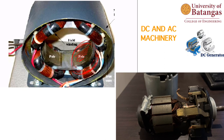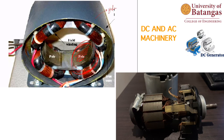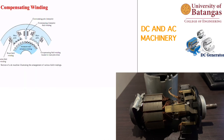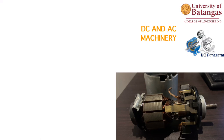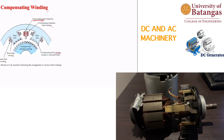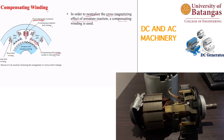This design reduces reluctance, allowing fluxes to be linked freely. Next is the compensating winding. To neutralize the cross-magnetizing effect of armature reaction, a compensating winding is used. Because the field poles create a magnetic field in the air gap, when the armature rotates and voltage is induced, current flows in the armature conductors.